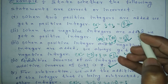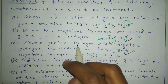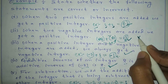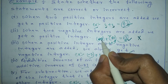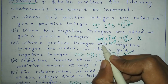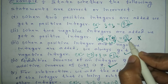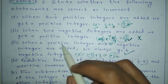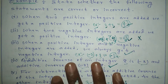In the second point: when two negative integers are added, we get a positive integer. We can check this with an example: minus 2 plus minus 1. When we add both these negative numbers, it results in minus 3, which is a negative integer.